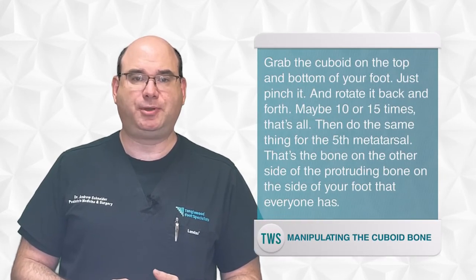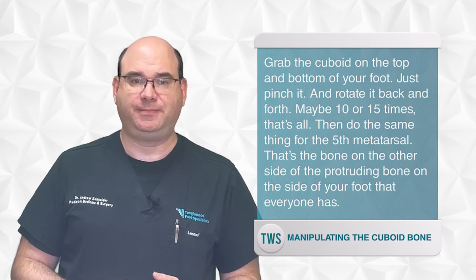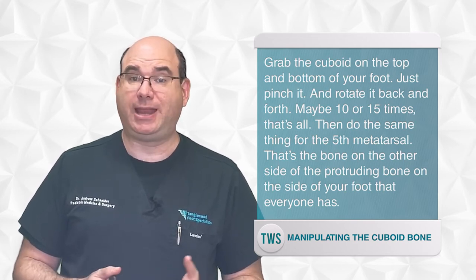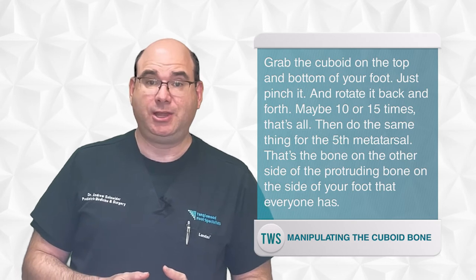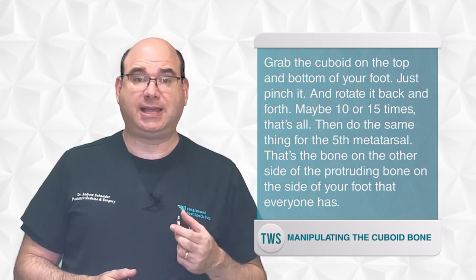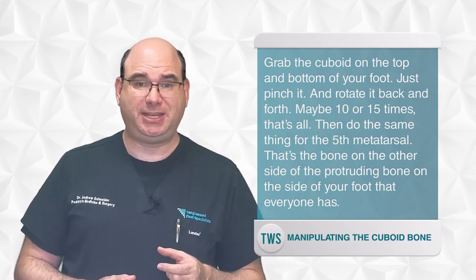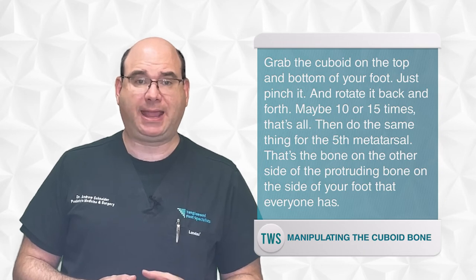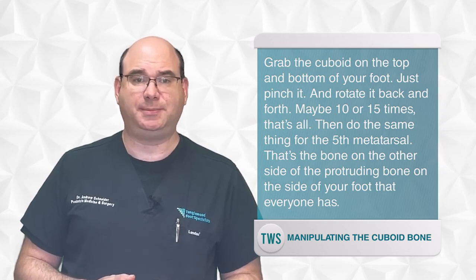It's the bone right behind the protrusion on the outside of your foot. Yes, everyone has that bone sticking out. Grab the cuboid on the top and bottom of your foot, just pinch it and rotate it back and forth, maybe 10 or 15 times. That's all.